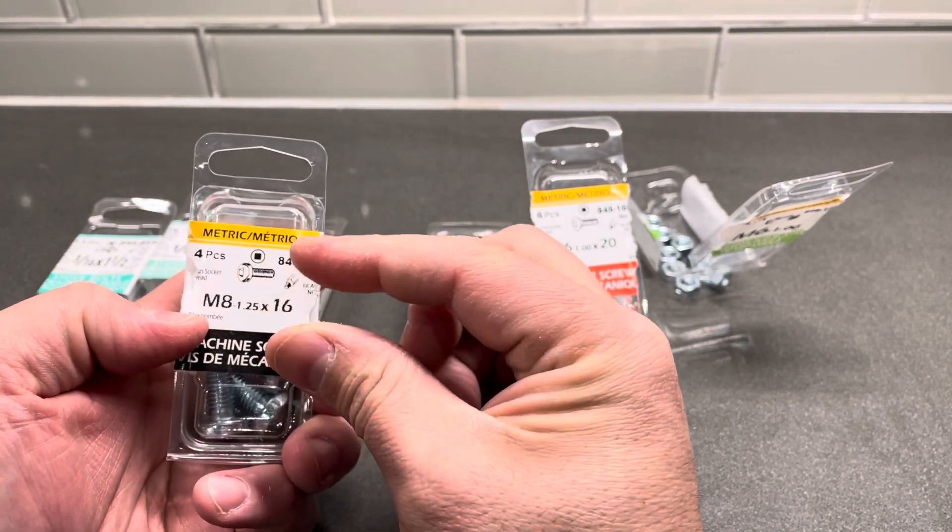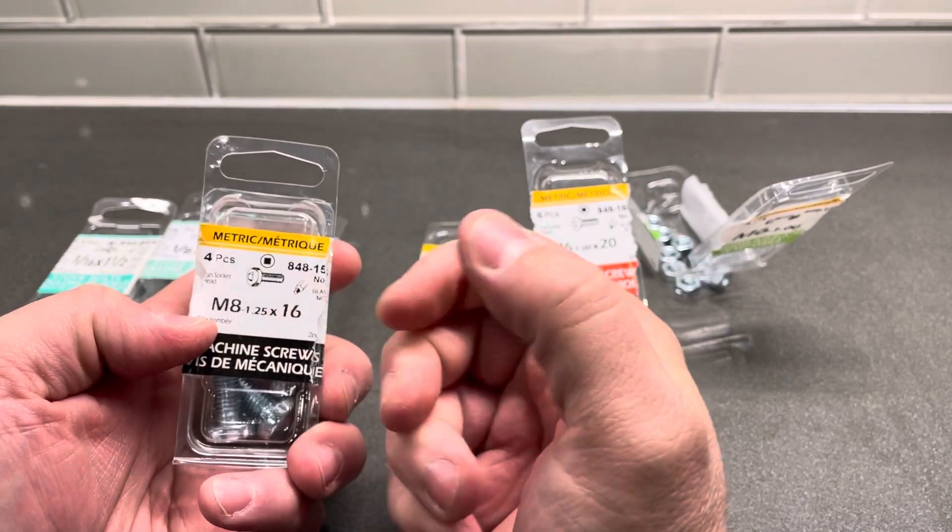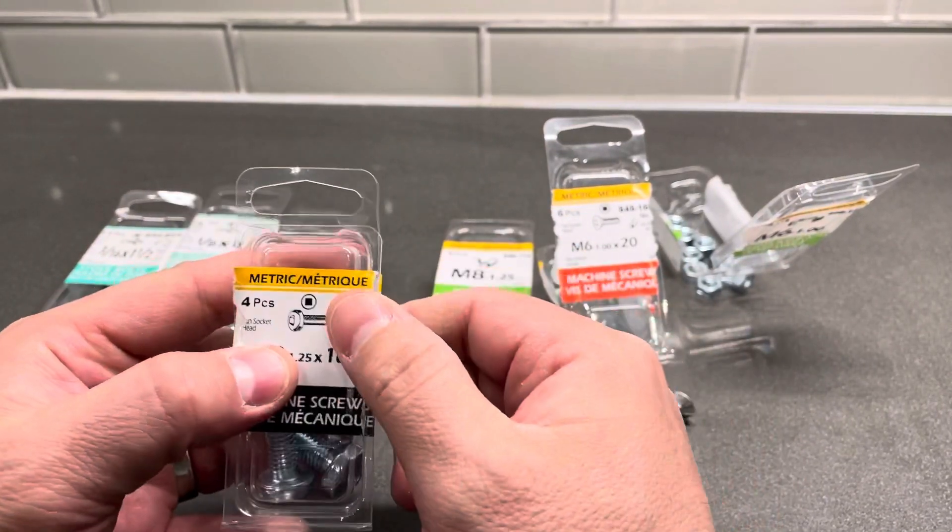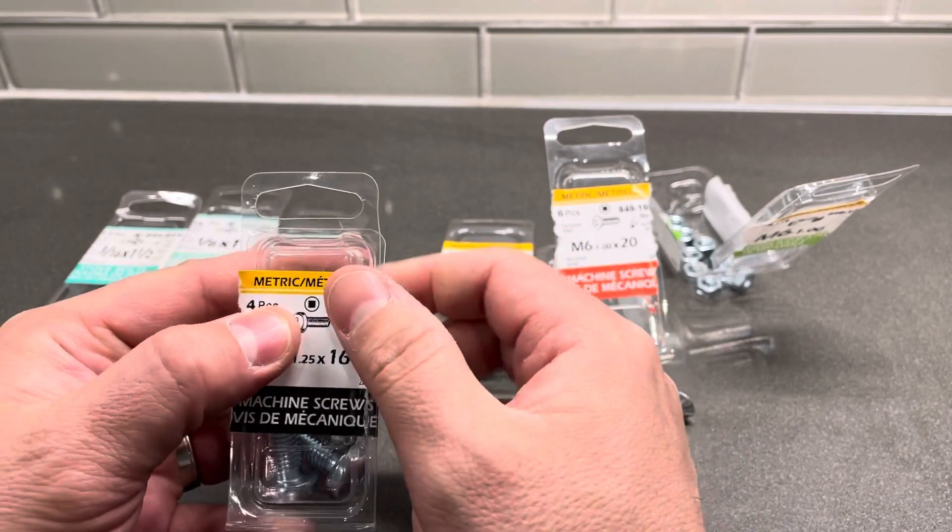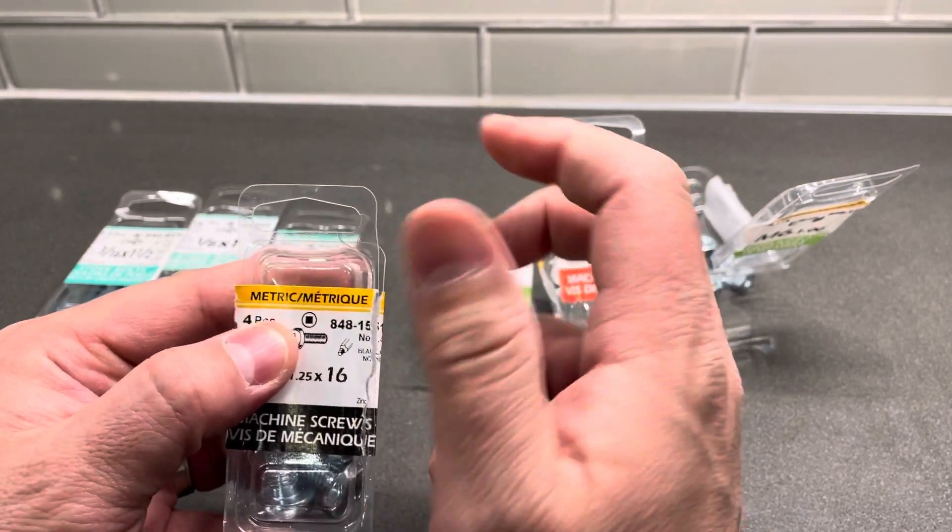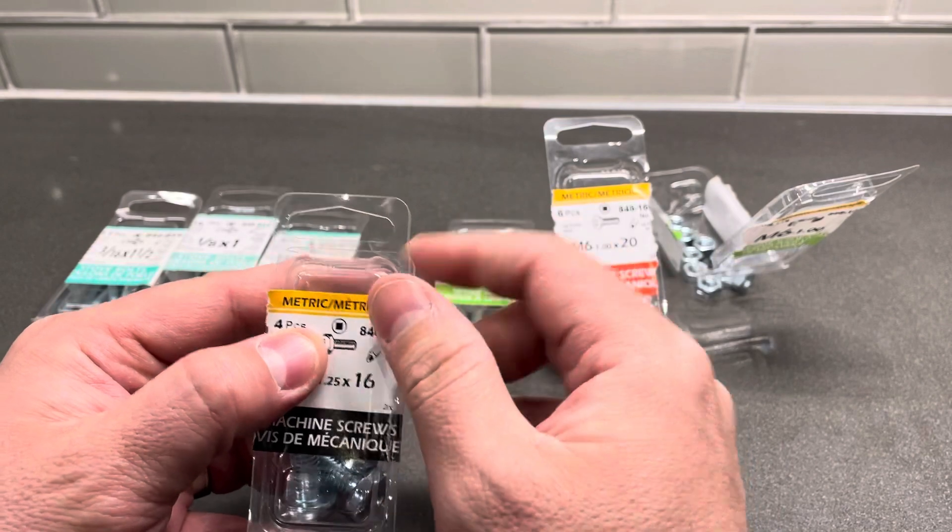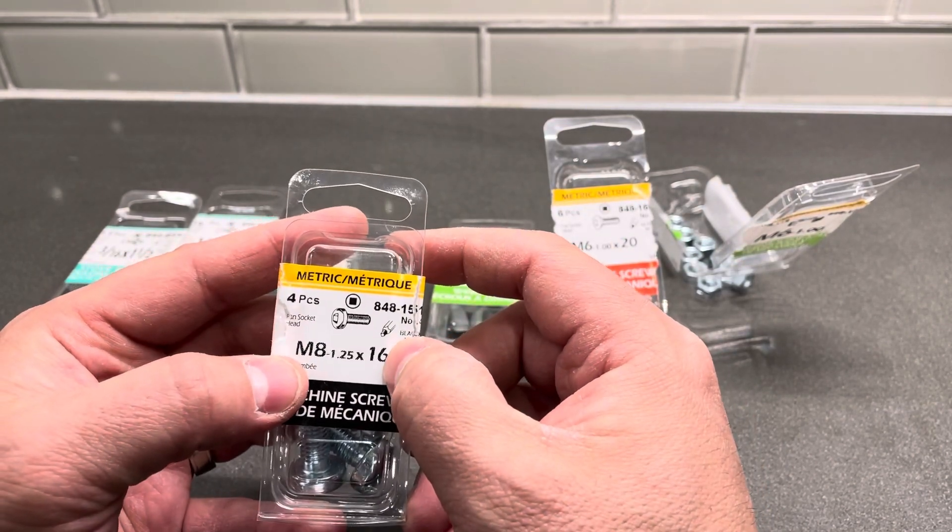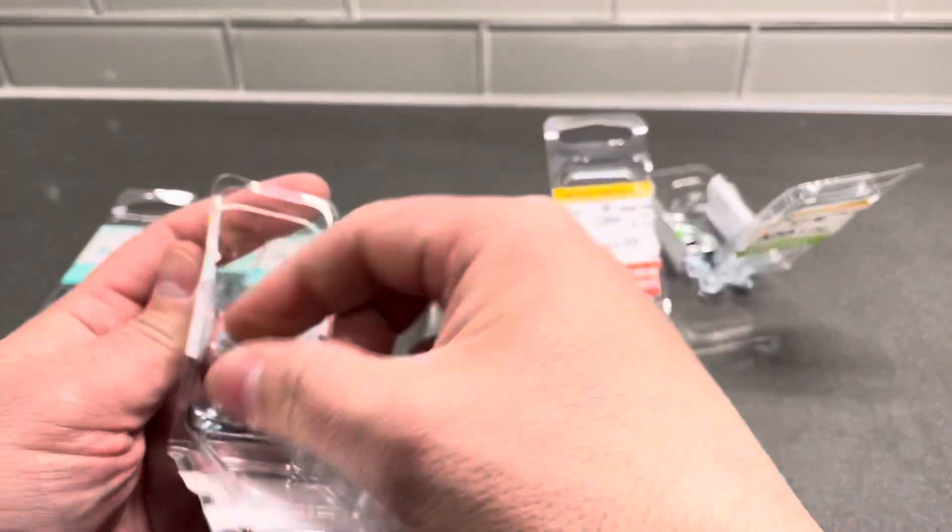The smaller the distance between each thread, the more threads you're going to get, which is going to create usually a stronger type of hold for the most part because it's spun more times. You get more threading. And then 16 is the length of the bolt in millimeters.